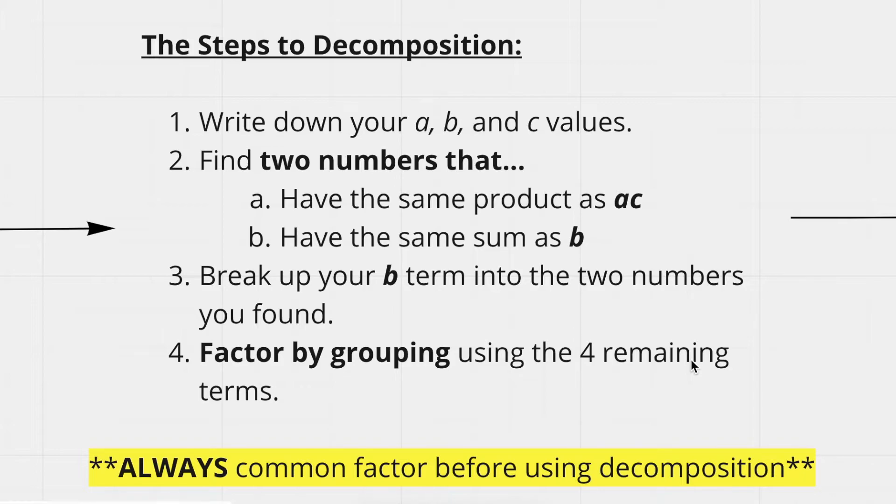And the final step is to factor by grouping using the four remaining terms, which is basically just common factoring each pair of terms that are remaining.